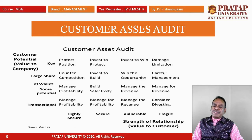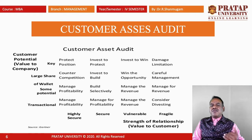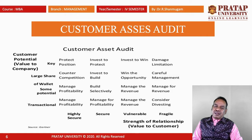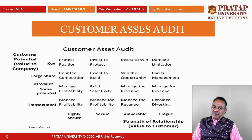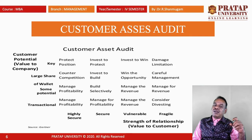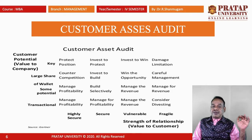Counter competitions, like Reliance versus Tata. Invest to build: companies win opportunities through careful management. This includes building selectivity, managing revenue, and managing for profitability. Companies may also consider diversifying. The first column is highly secure, the second column secure, the third column vulnerable. Invest to win — sometimes it may succeed, sometimes it may not. Then there is the fragile category.